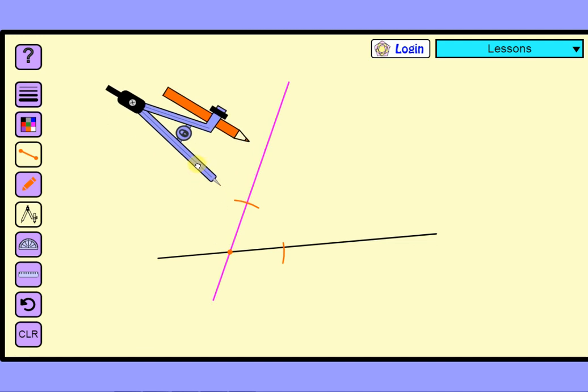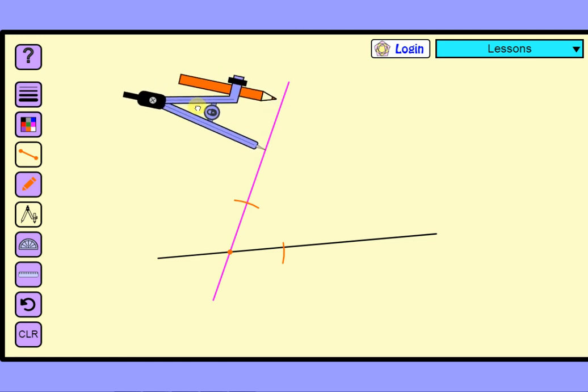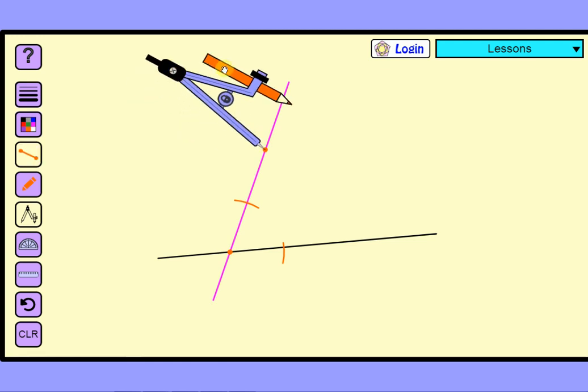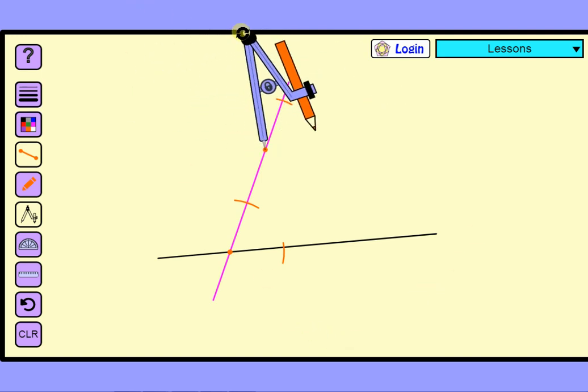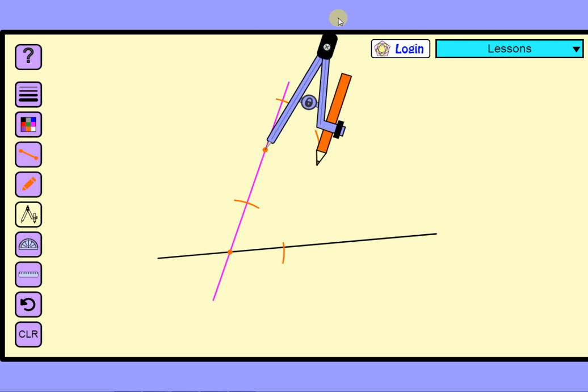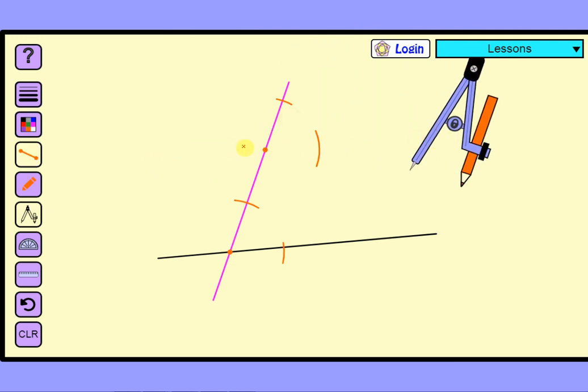At the other point, so we've got our point here, we can do the same thing, but we don't know where the line is. So what we're going to do is we can do an arc. So when the arc goes down here, make sure it goes far enough that we know this line is going to go through.